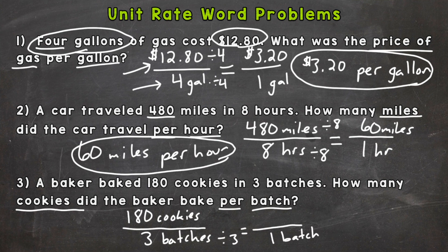And whatever we do to the bottom, we need to do to the top in order to keep it an equivalent fraction. So 180 divided by three would be 60 cookies. So 60 cookies per batch.